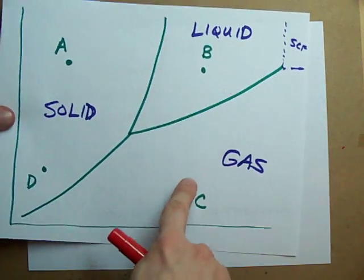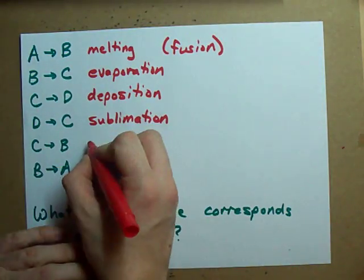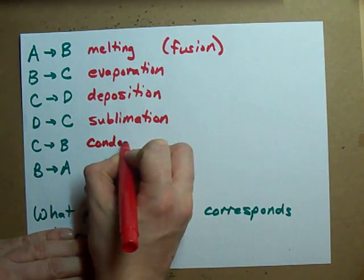C to B. Gas turning into a liquid. Well, you've seen that happen. It's called condensation.